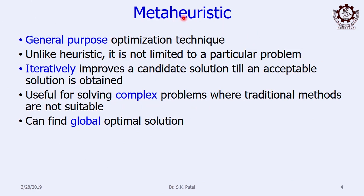Meta-heuristics is a general-purpose optimization technique. If heuristics is a problem-specific optimization technique, meta-heuristics is general purpose — any type of problem it will be applicable. This is not limited to only a particular problem. It also works iteratively and the solutions get improved iteration after iteration, and the advantage of meta-heuristics is that it provides us global optimal solutions.